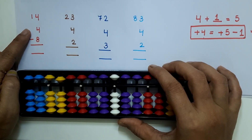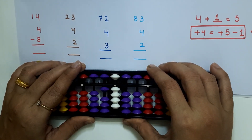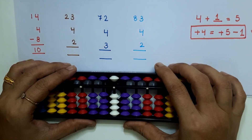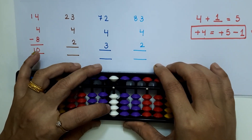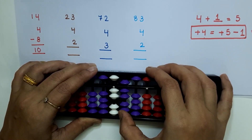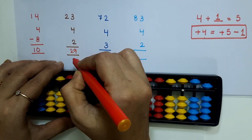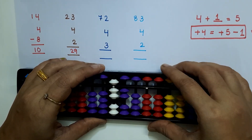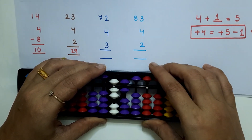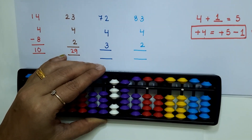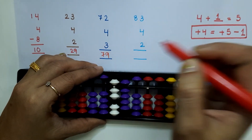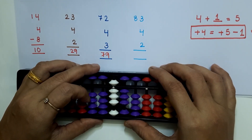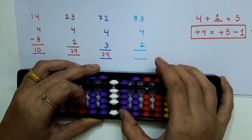Next example is 13 plus 4 minus 8: plus 4 becomes plus 5 minus 1, minus 8 — answer is 10. Next example is 23 plus 4 plus 2: plus 4 becomes plus 5 minus 1, plus 2 — answer is 29. Next example is 72 plus 4 plus 3: plus 4 becomes plus 5 minus 1, plus 3 — answer is 79. Last example is 83 plus 4 plus 3: plus 5 minus 1 — answer is 89.